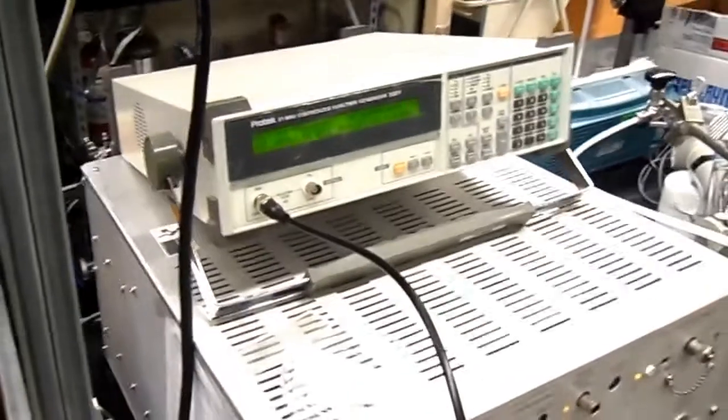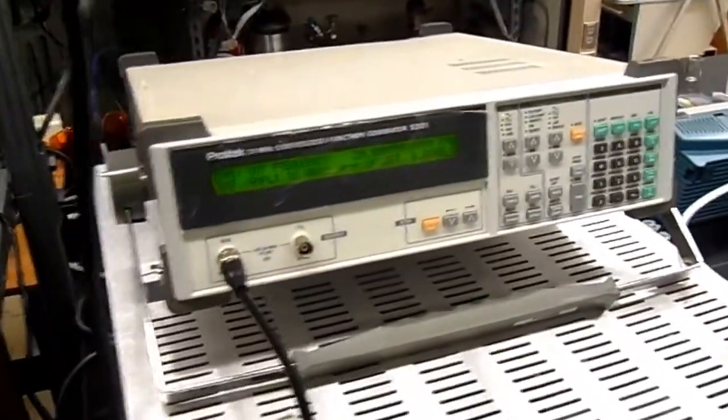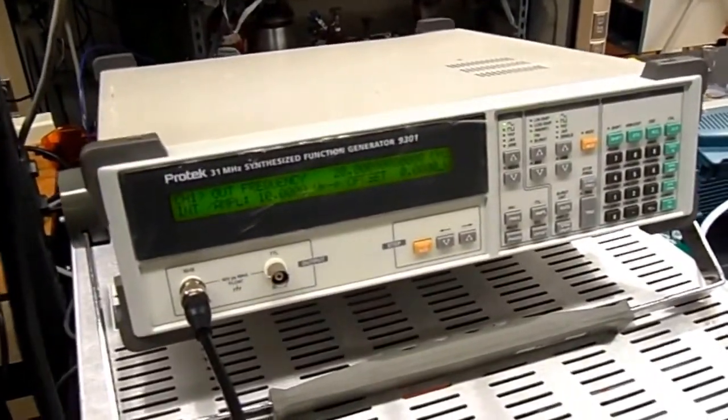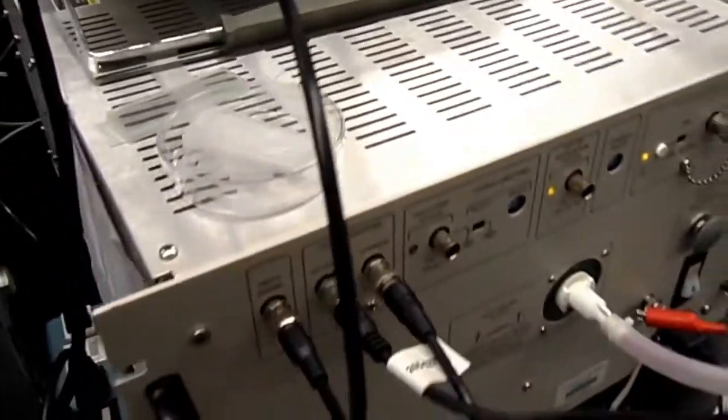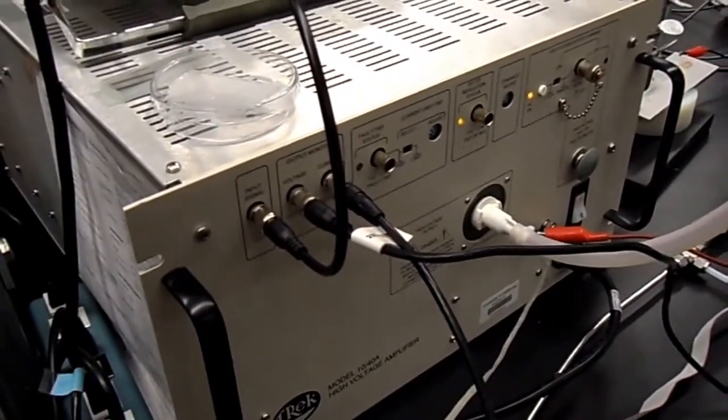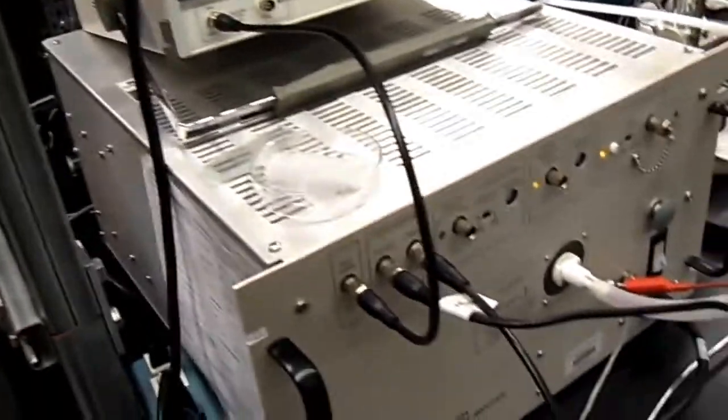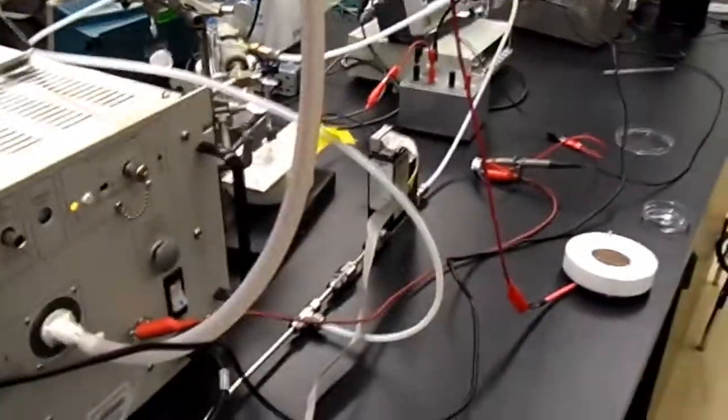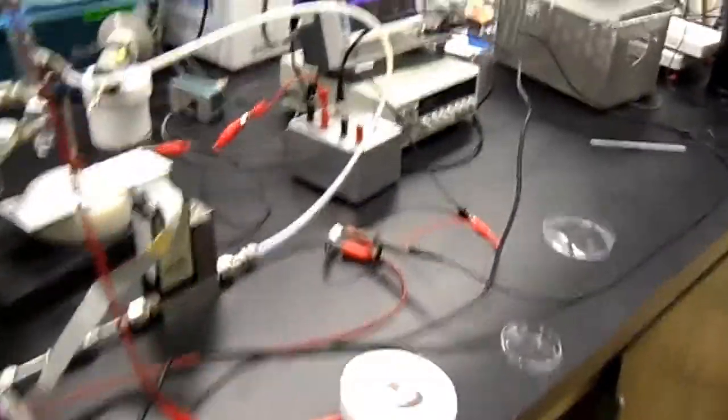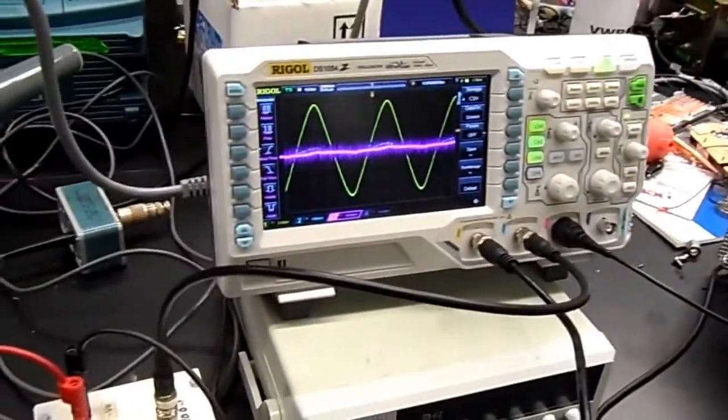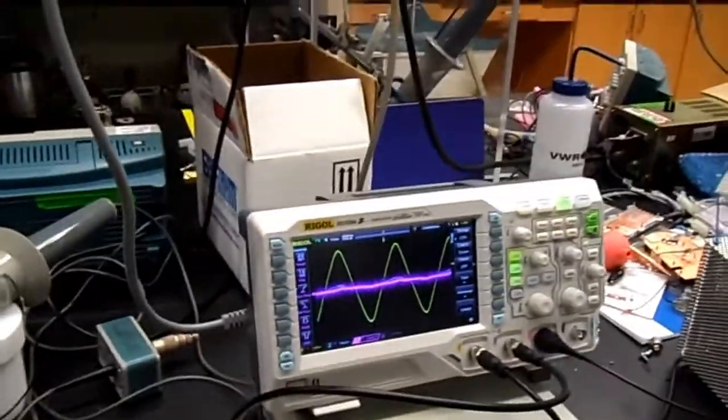So this guy is currently hooked up to a function generator here and the function generator feeds the waveform of interest into this amplifier. It's amplified a thousand times and then we're actually going to use this to generate a plasma as I'll show you. So we sort of monitor the proceedings over here with this computer interfaced oscilloscope.